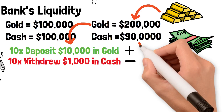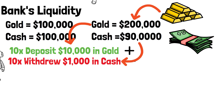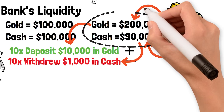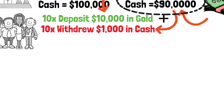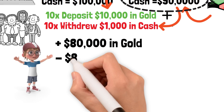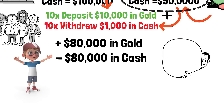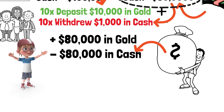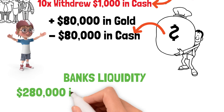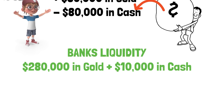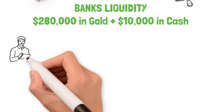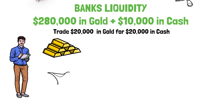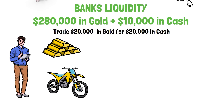Those ten customers withdrew a total of $10,000 in cash, leaving the bank with $200,000 in gold bars and $90,000 in cash. Then the 11th customer brought in $80,000 in gold bars and swapped them for $80,000 in cash. The bank now has $280,000 in gold bars but only $10,000 in cash. Now the 12th customer — you — brings in $20,000 in gold bars wanting to swap them for cash to buy a new dirt bike.